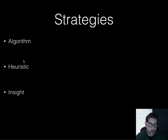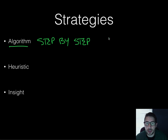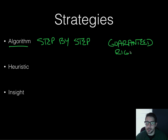As you're thinking, we have different strategies that we use. An algorithm is a step-by-step process, and you are guaranteed the right answer if you stick with it. So an algorithm is: guaranteed, step by step.